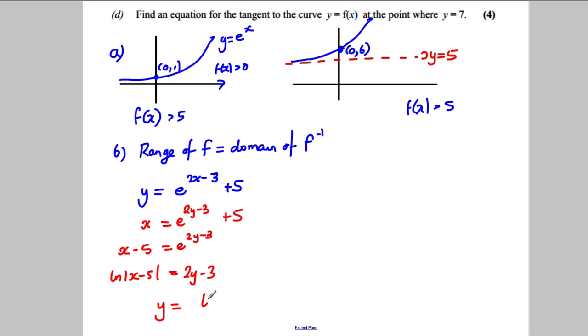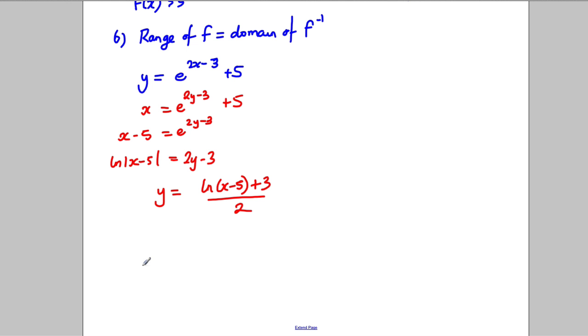So I can state that y is equal to the natural logarithm of x take away 5, add 3, all divided by 2. And I state my inverse function. f minus 1 of x is therefore the natural logarithm of x take away 5, add 3, all divided by 2.